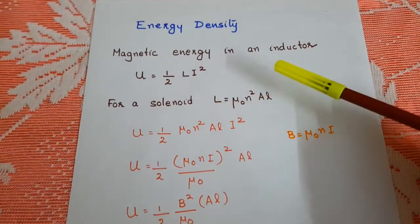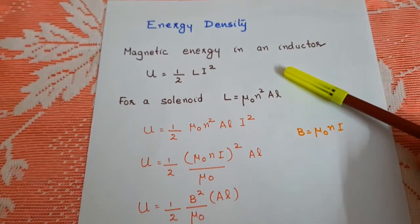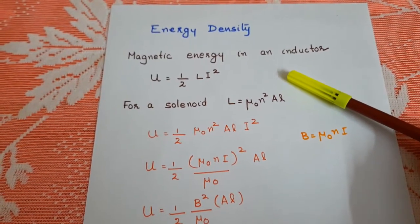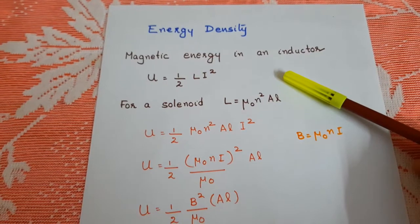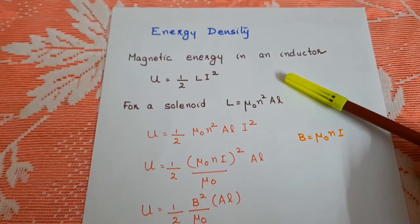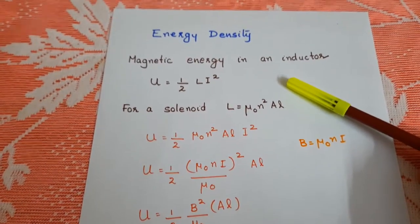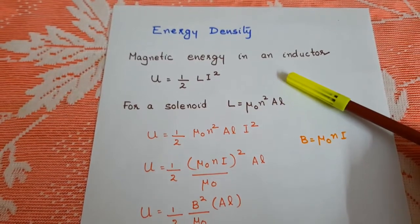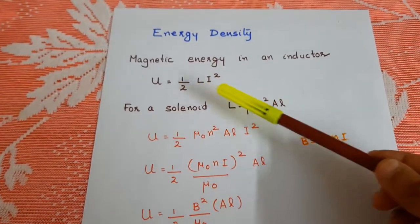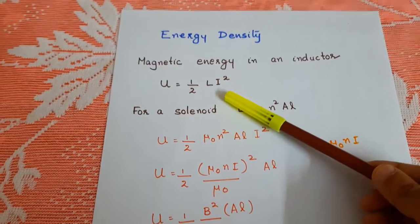Now let us see the energy density in an inductor. Energy is stored in an inductor in the form of magnetic field. The magnetic energy in an inductor is given by half L I square.